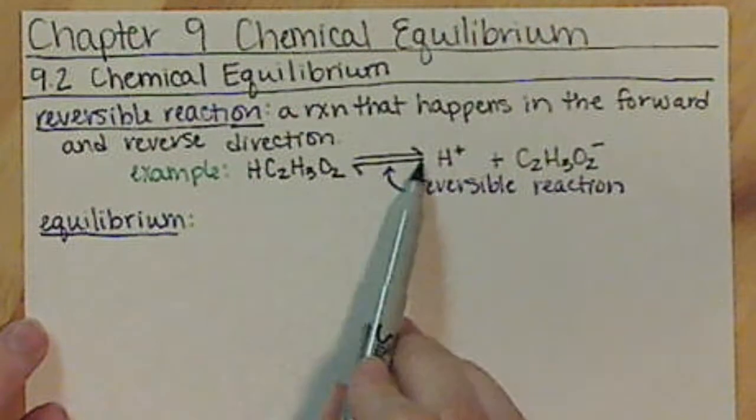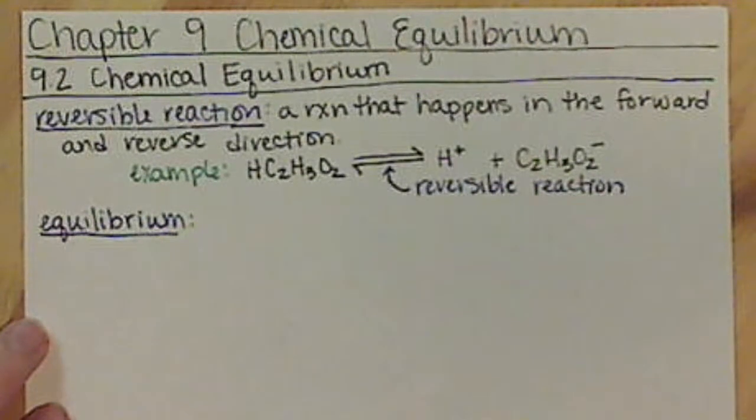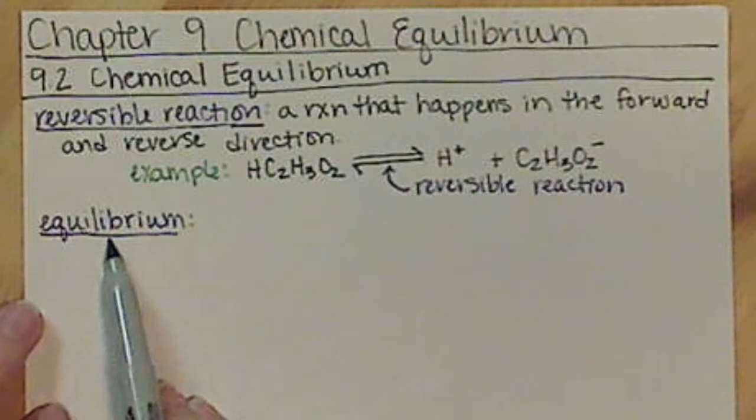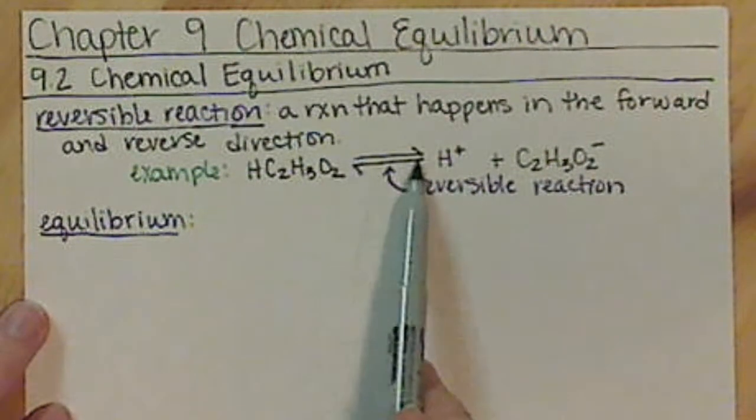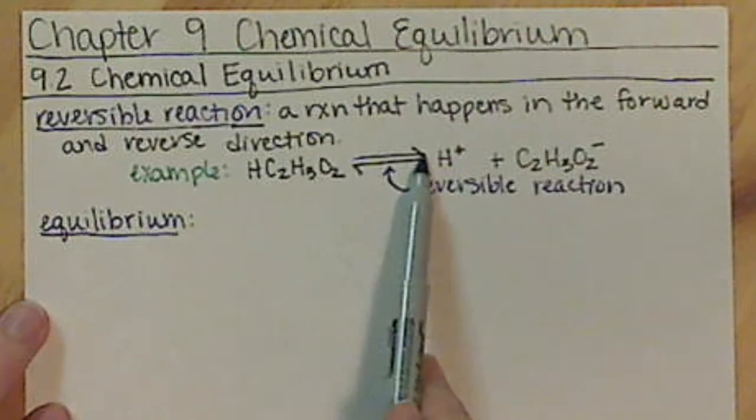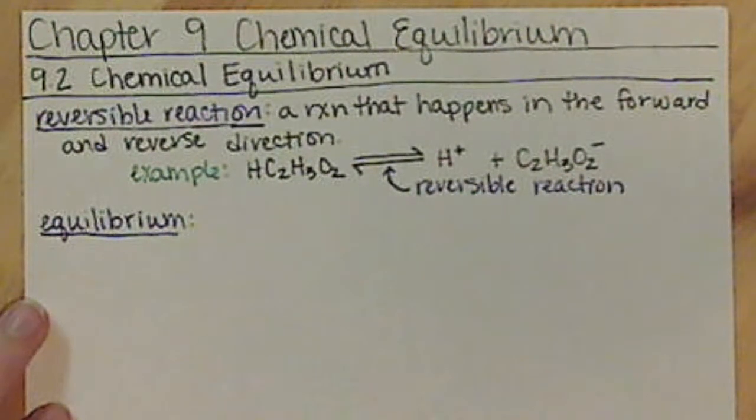The rate of the forward is equal to the rate of the reverse. Notice I didn't say that it stops reacting. In a chemical equilibrium, we're always going to be going back and forth, but the rate at which we go forward is equal to the rate at which we go in the reverse direction.